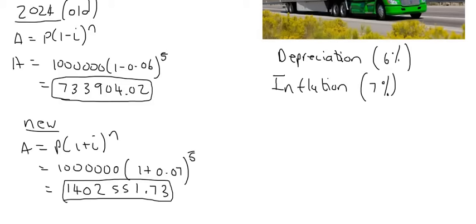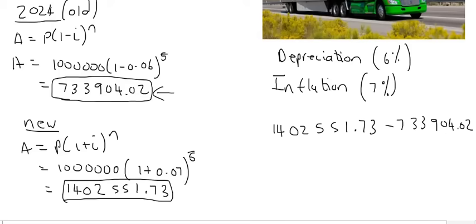So how much money will this truck owner have to have saved up by that time? Well, he needs 1.4 million, but he's going to sell this truck for 733,000, so he'll only need to have the difference between those numbers. If you subtract those two numbers from each other, you end up with R668,647.71.